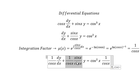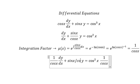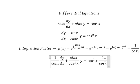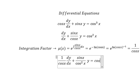This one, we get sine x over cosine x squared. This one, we get cosine x.